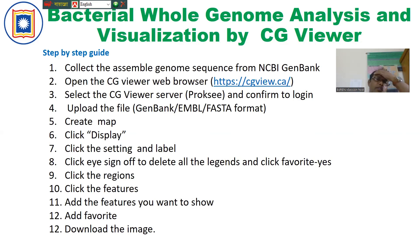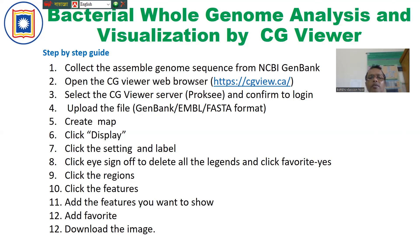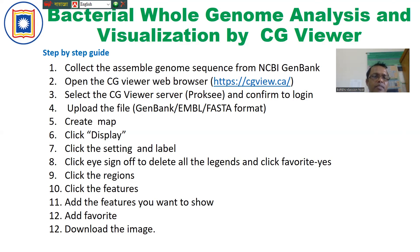First, we have to collect the assembled genome sequences from the NCBI database. I will show you an example, but you can also use your own assembled genomes to analyze for visualization and annotation in GenBank. Then you open the CGViewer web browser from the website mentioned here. Select the CGViewer server, which is also called a proxy. Before uploading your genome, you have to log in and upload your genome in GenBank or EMBL format. Then you have to take a little time to create a map.